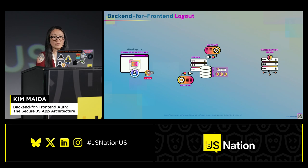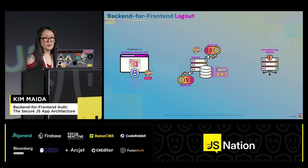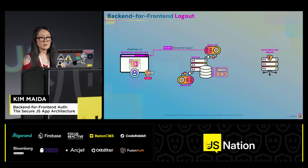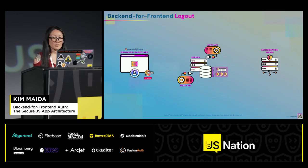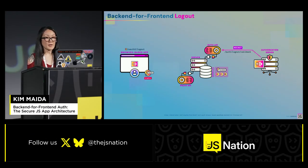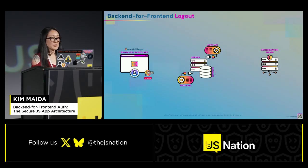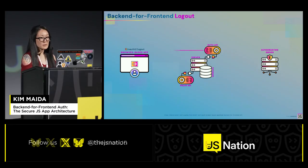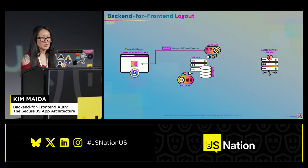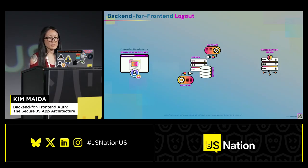When the user logs out, the front-end calls the back-end logout endpoint. It looks up the session and then redirects to the authorization server's OAuth 2 logout URI. The auth server logs the user out and redirects to the back-end logout callback. The back-end removes the session, deletes the session ID cookie, and redirects to a front-end logout callback page where the user is no longer logged in.